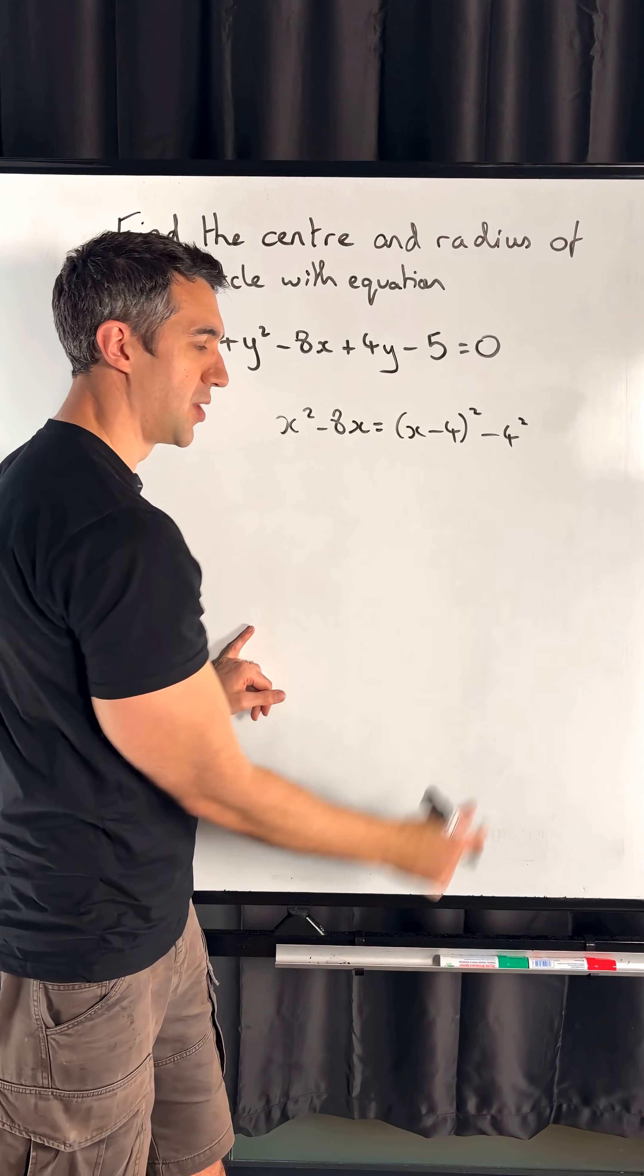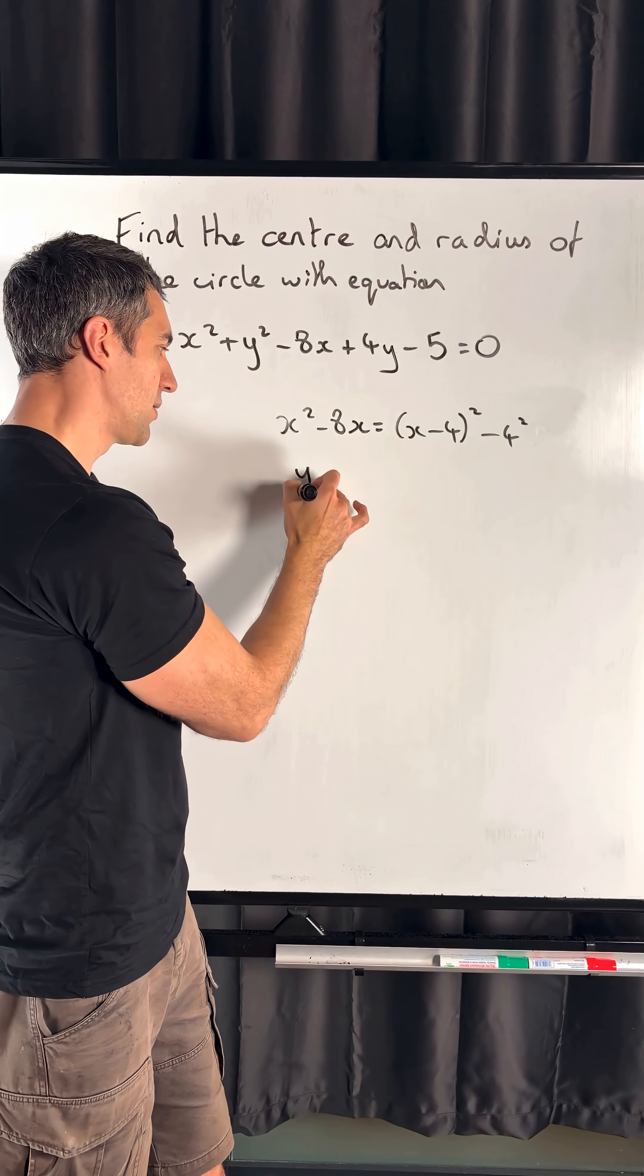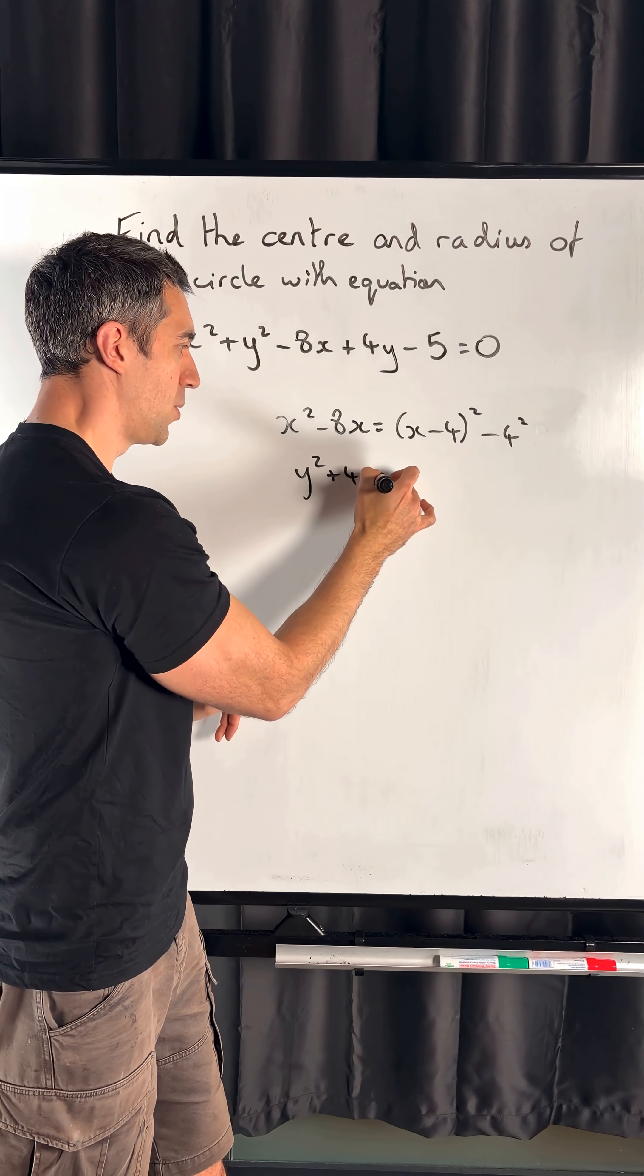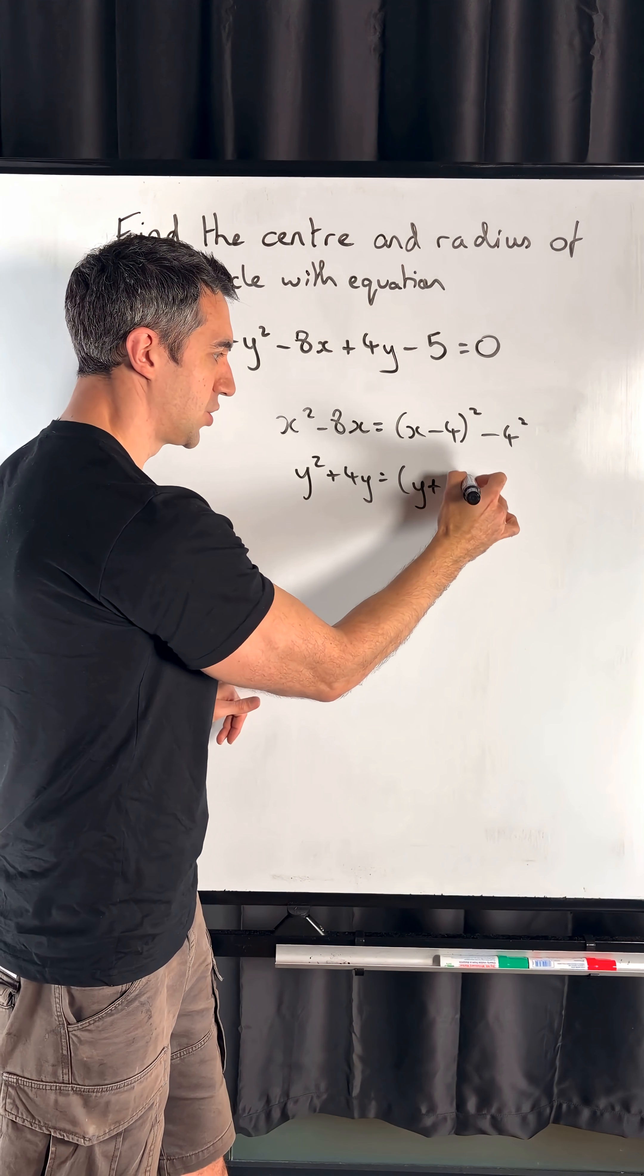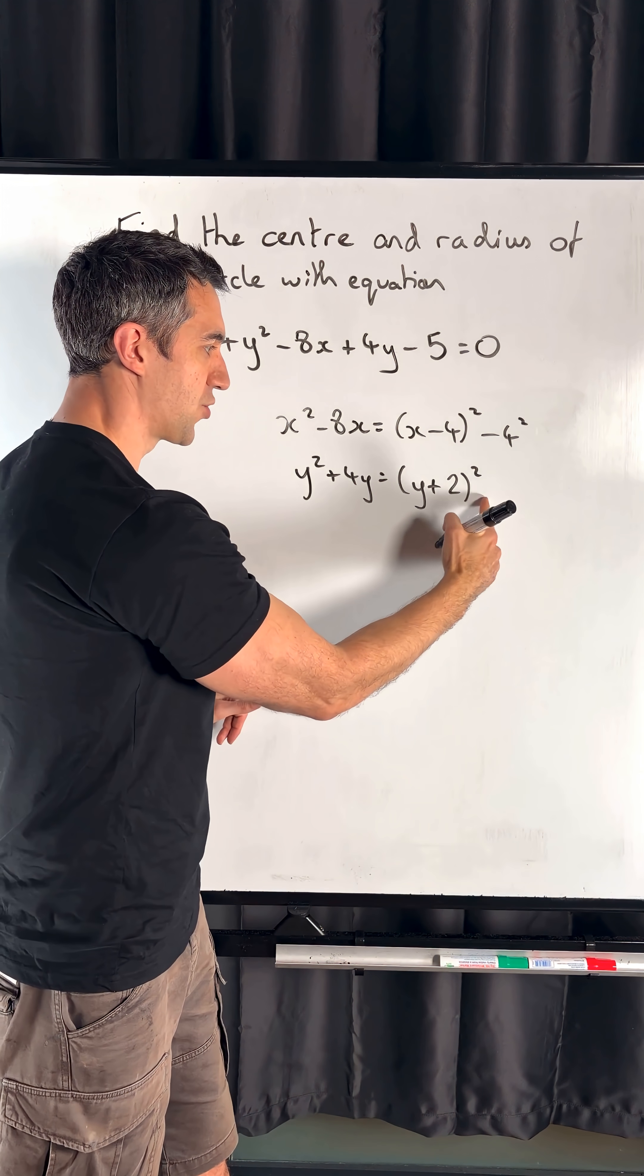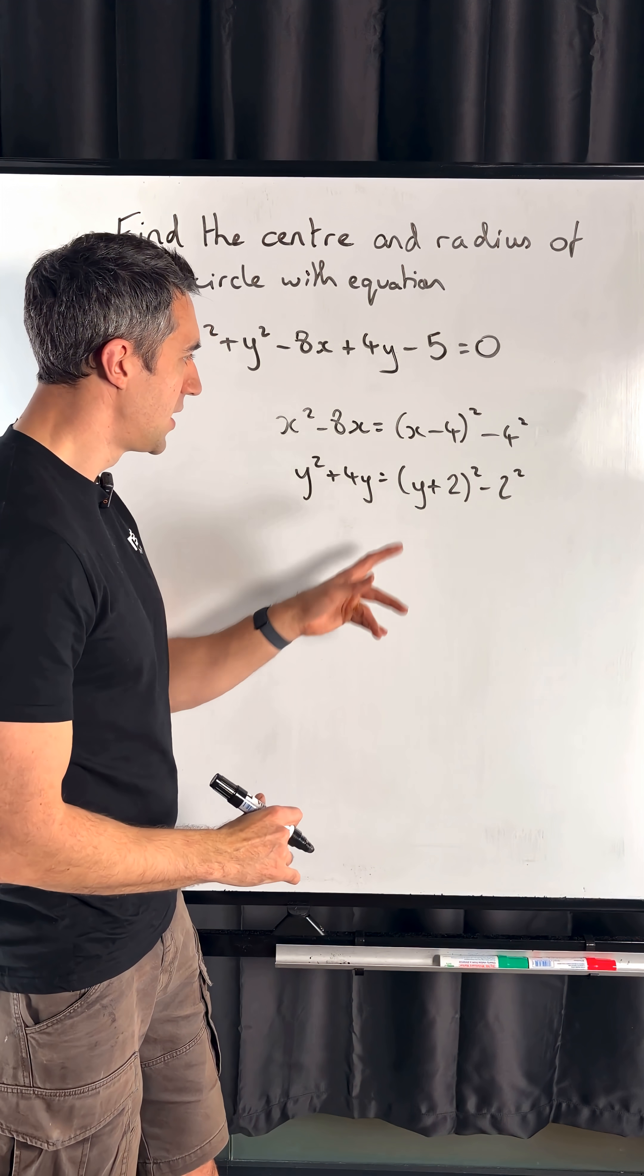We'll do the same thing with our y terms: y squared plus 4y. So y squared plus 4y gets us y plus—we're halving this plus 4 here—so plus 2 squared. And again, we're going to subtract our 2 squared for our normal completing the square method.